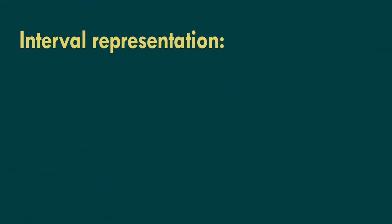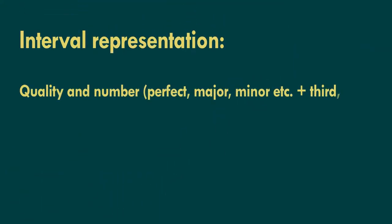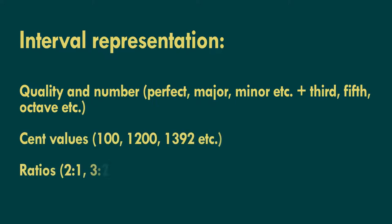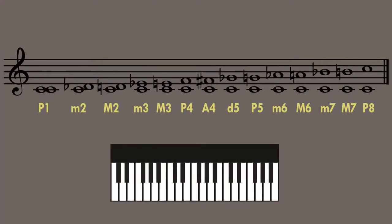There are three ways of representing intervals: using quality and number, cent values, and ratios. For instance, the major third is an interval name in which the term 'major' describes the quality of the interval, and 'third' indicates its number.